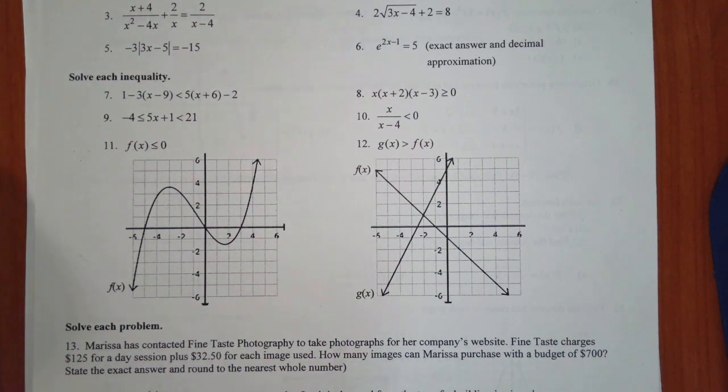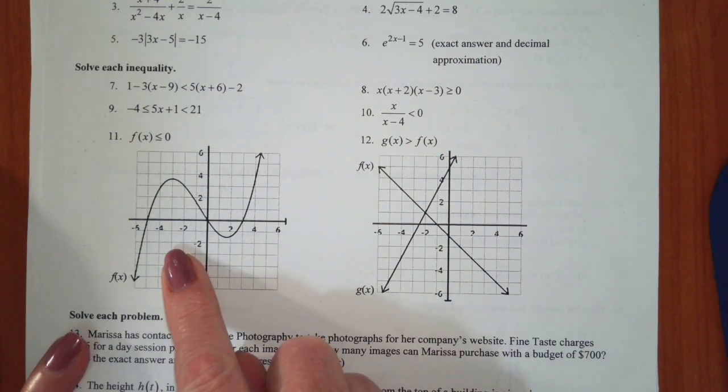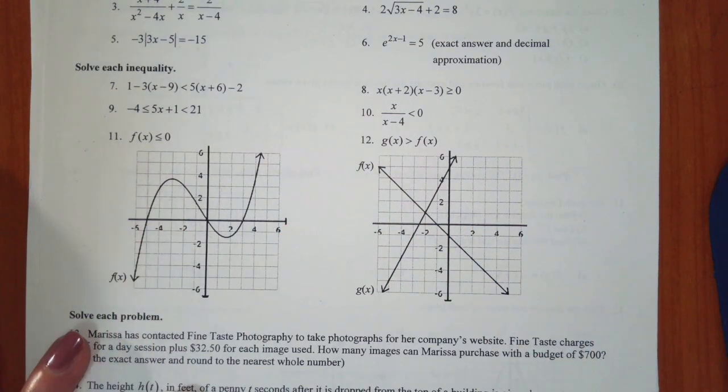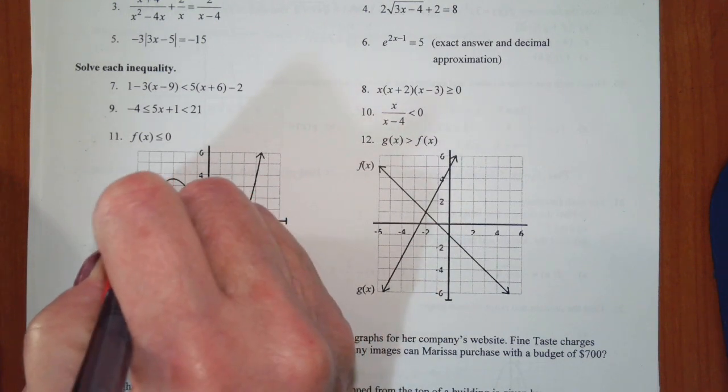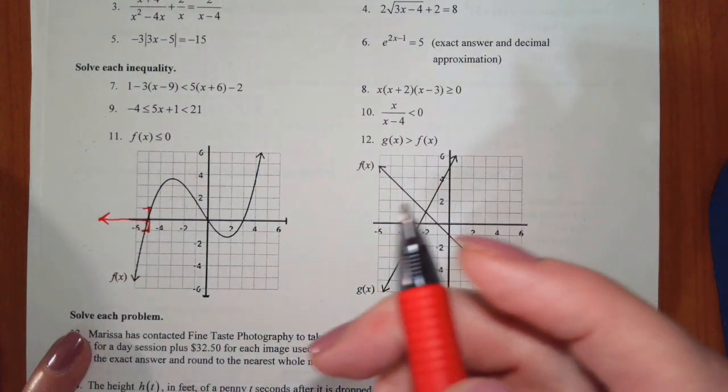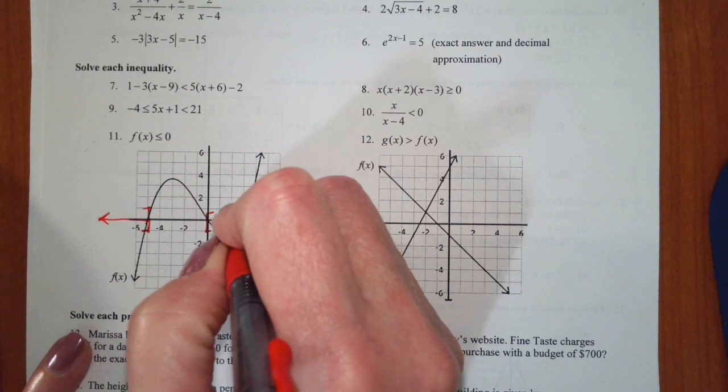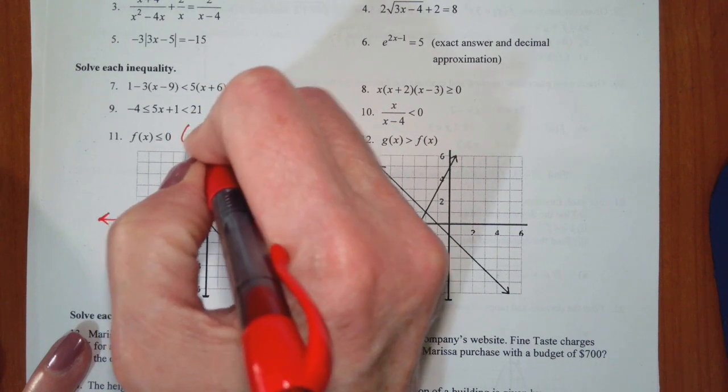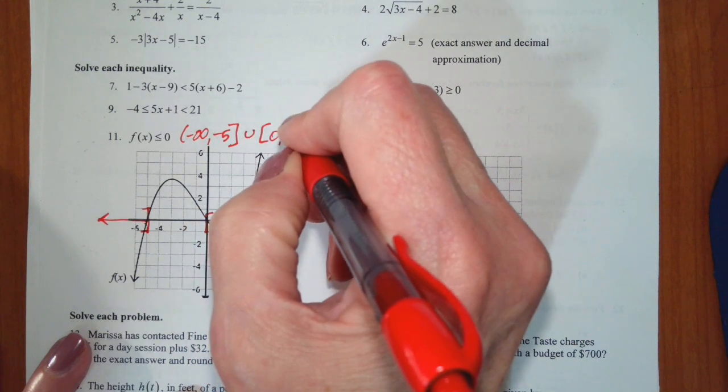Okay, let's continue on. We have two more inequalities to do and they are graphically. I'm going to look at this one just like I did this one, only I've given you the graph here. I want to know where this is less than or equal to zero, which means where is the graph below the x-axis or touching the x-axis. So that occurs from negative infinity to negative 5 and then from 0 to 3.